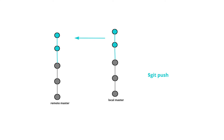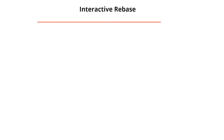Rebasing in short is the process of moving or combining a sequence of commits to a new base commit. Now that we understand merging and rebasing, let's look at interactive rebase. With regular rebasing, we moved all commits from the feature branch to the main branch. Interactive rebasing gives you the opportunity to alter individual commits in the process, letting you clean up history by removing, splitting, or altering existing commits.